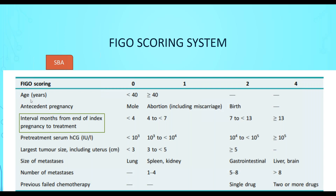The eight prognostic parameters for FIGO scoring are: age, antecedent pregnancy (live birth scores highest, indicating bad prognosis due to delay in diagnosis), interval in months from the end of index pregnancy to treatment (less than four, four to seven, seven to 13, and 13 or more — as duration increases, prognosis worsens; this is the most important prognostic factor), pre-treatment HCG levels, largest tumor size including uterus, site of metastasis, number of metastases, and prior chemotherapy.